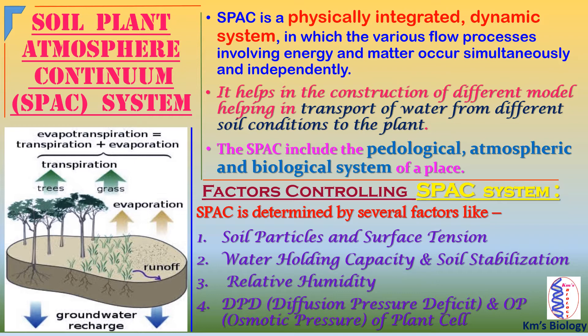The factors are: firstly, soil particles and surface tension; secondly, water-holding capacity and soil stabilization; thirdly, relative humidity; and fourthly, diffusion pressure deficit and osmotic pressure of plant cell. Here is a diagram that shows evapotranspiration — that means transpiration and evaporation.